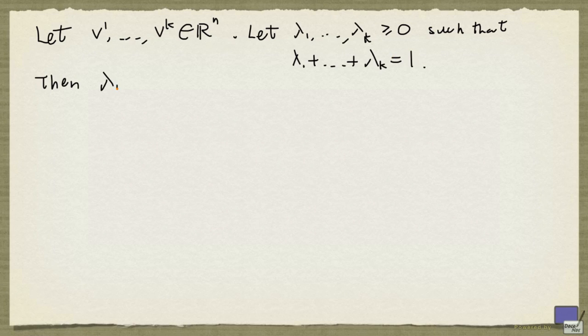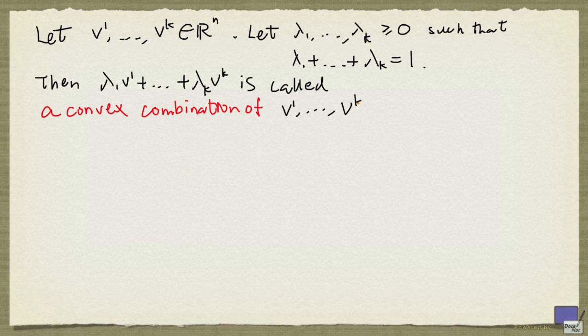Then λ1 times V1 plus all the way to λk times Vk is called a convex combination of V1 up to Vk.